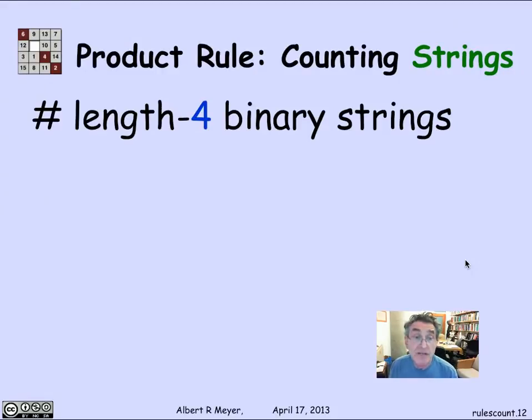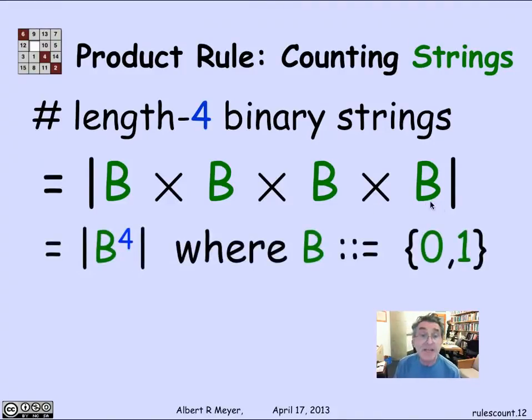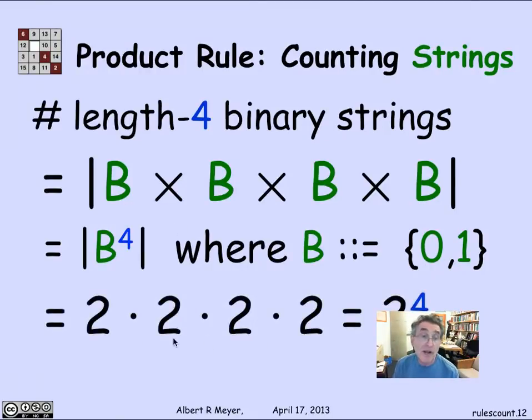A useful immediate application of this is, how many binary strings are there? How many strings of zeros and ones are there of length 4? Well, the length for binary strings, it can be explained as the product of B times B times B times B. We're not writing parentheses here. It's B times B cross B. So I'm thinking of a quadruple like this as being a pair whose first element is a triple, and a triple is a pair whose first element is a pair. And given that it doesn't really matter how you break it up, we just typically write it as B cross B cross B, and even abbreviate that as B to the fourth, where B is 0, 1, and the product rule says that the size of this is the size of B times the size of B times the size of B times the size of B, or 2 to the fourth.